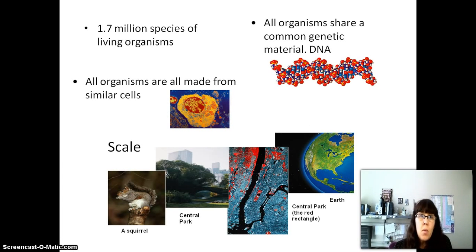We've got about 1.7 million species of living organisms, and all of them are made of similar cells that have basic components made from the same sorts of chemicals. All organisms share a common genetic material which is referred to as DNA, or deoxyribonucleic acid.